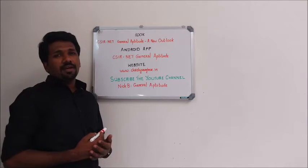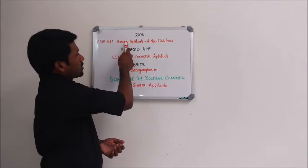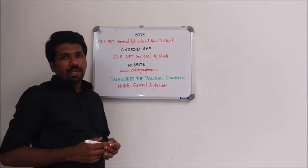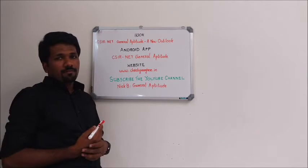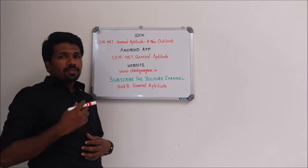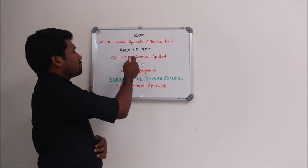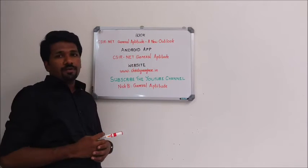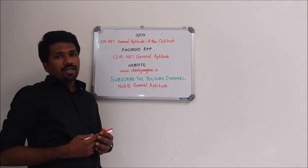This video series is primarily released as an additional resource for readers of the book CSIR NET General Aptitude: A New Outlook. If you don't have a copy of this bestseller book, you can buy it from Amazon, Flipkart, or Paytm. If you want more study materials on General Aptitude, you can download our free Android app CSIR NET General Aptitude from Play Store.